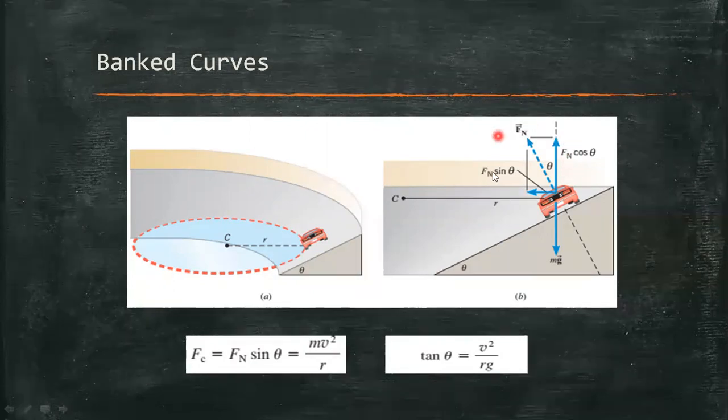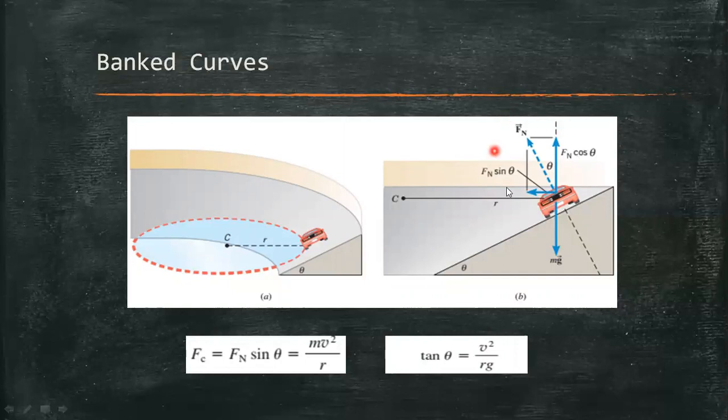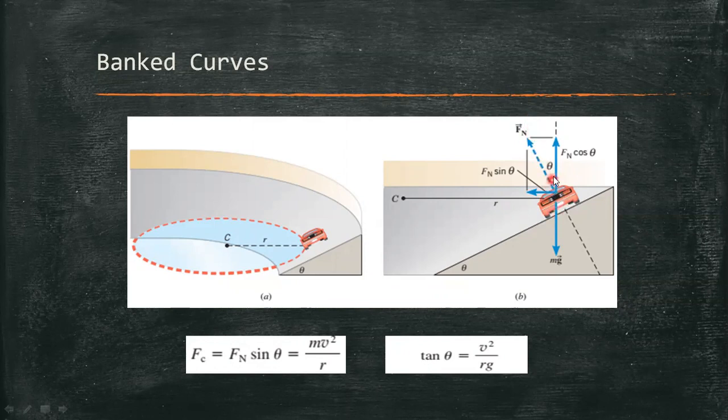As we can see in figure B, the normal force is perpendicular to the surface. That's why it makes an angle of theta relative to the vertical. The magnitude of this angle is also equal to the angle of the surface with the horizontal.